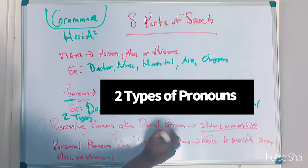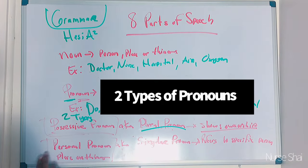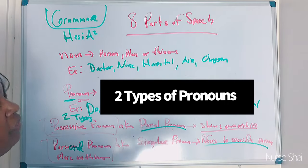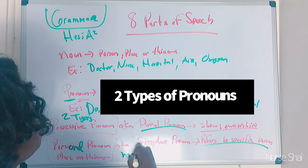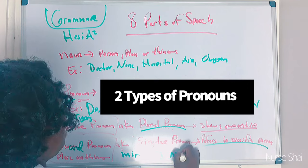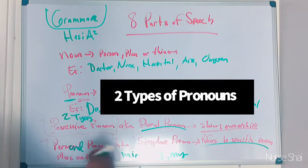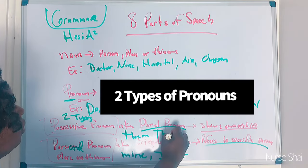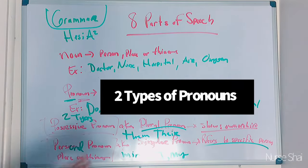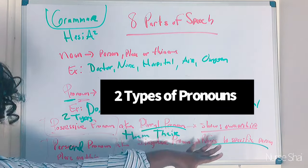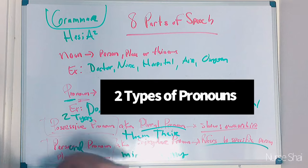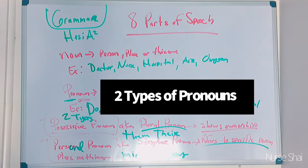Possessive pronouns show ownership — you might also call them plural pronouns. Personal pronouns refer to a specific person. An example of a singular pronoun would be 'mine,' 'I,' or 'my.' Possessive would be 'them' or 'their.' If they ask where's the possessive pronoun, it'd be words that show possessing and ownership. Personal pronoun would be 'me,' 'I,' 'my.' Also, 'I' is singular — it helps me remember it.